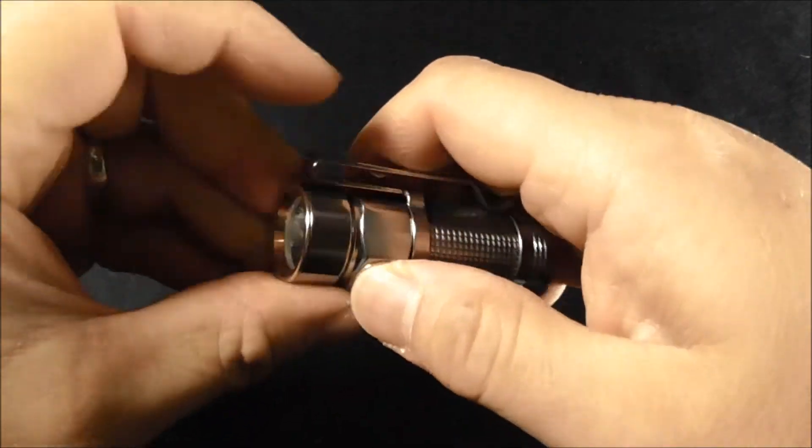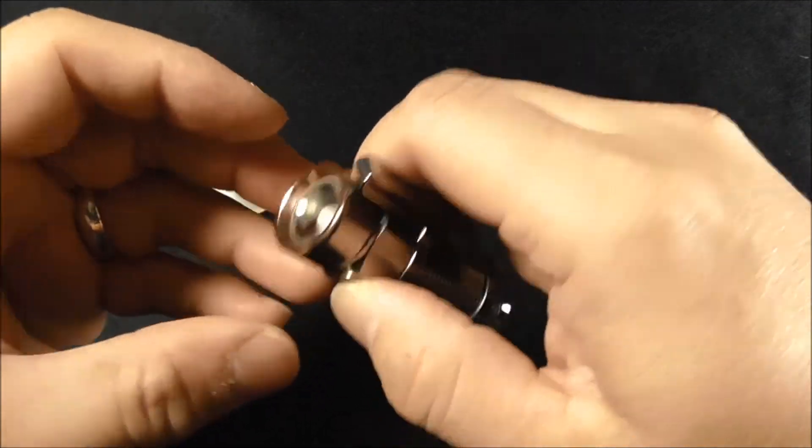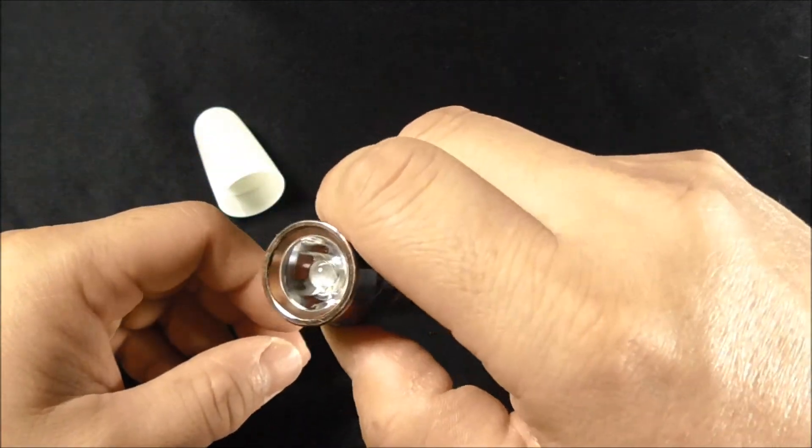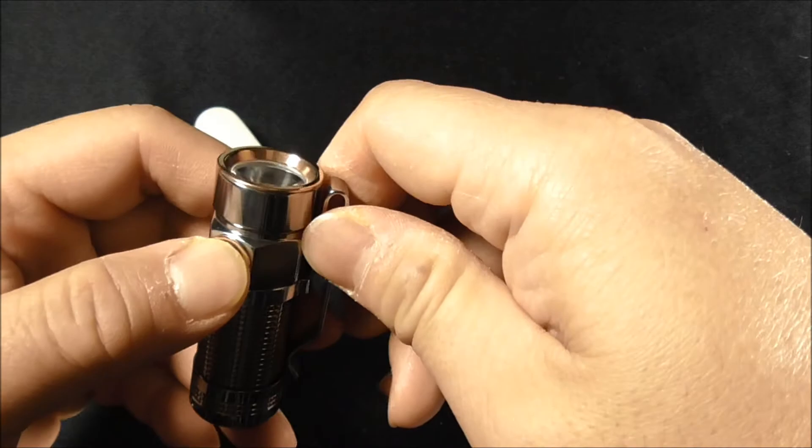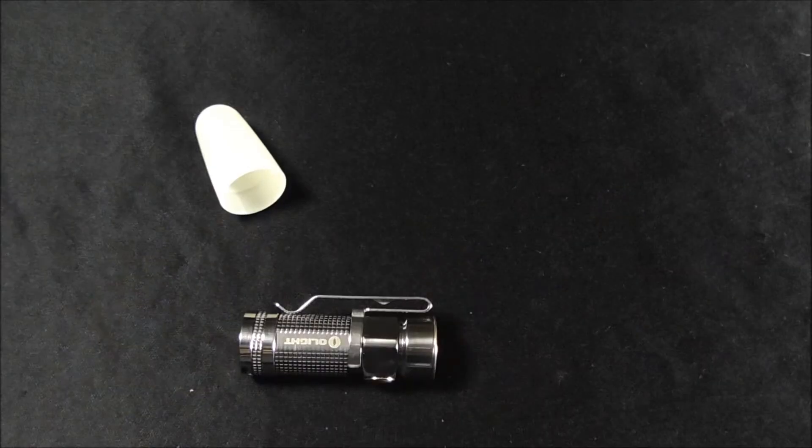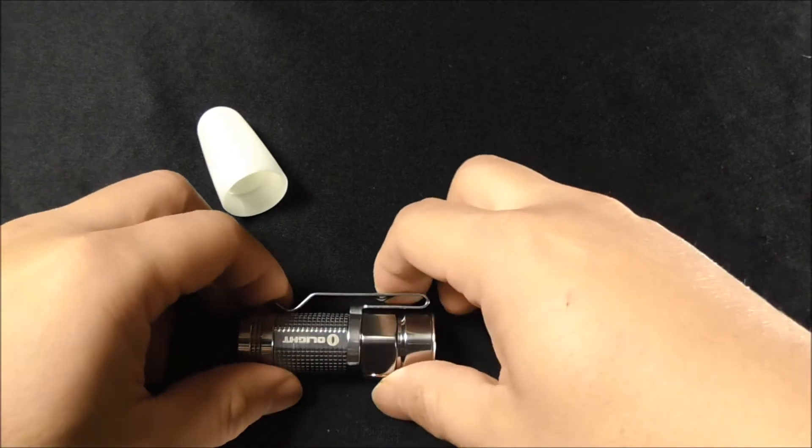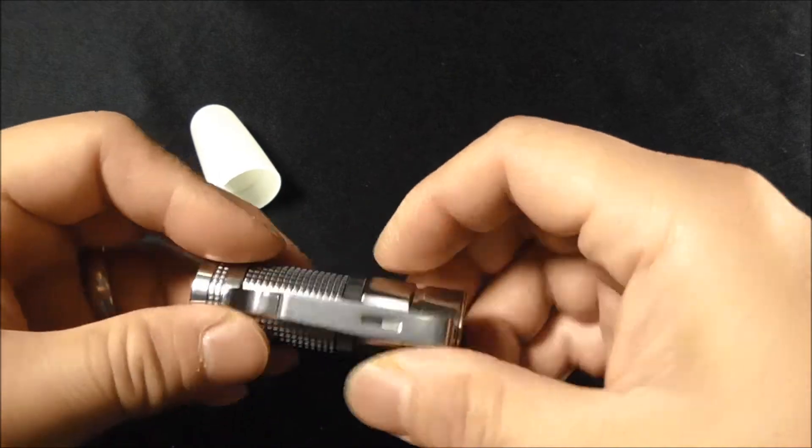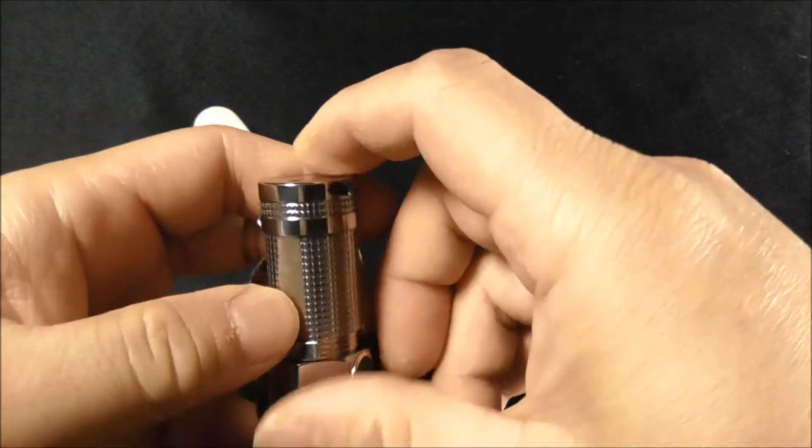Now what shocked me was that when I tried to turn on the flashlight, it did not turn on. I panicked for a second and thought this is probably a defect unit from the manufacturer. Then I went back to the user manual, which I should have done in the beginning, and realized I actually inserted the battery in the wrong polarity.